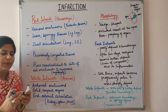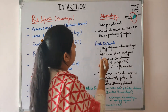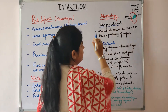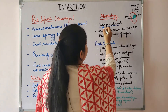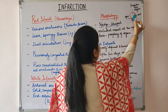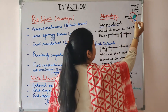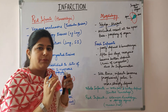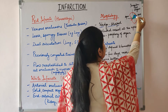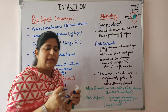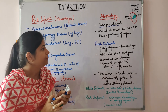The morphology of infarcts: infarcts tend to be wedge shaped — triangular, a three-dimensional shape. The apex is formed by the occluded vessel and the base by the periphery of the organ. The margins of the wedge are irregular and not well defined, reflecting the vascularity of the tissue from adjoining vessels.